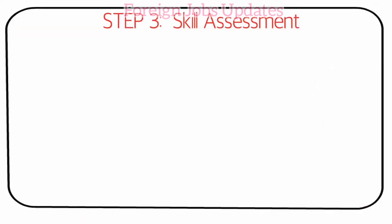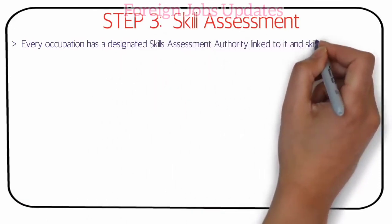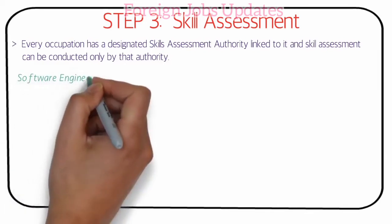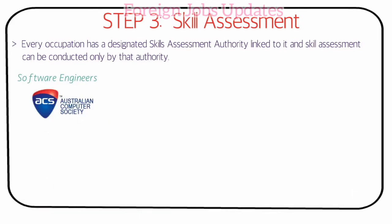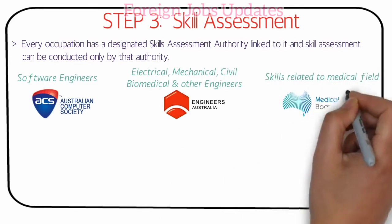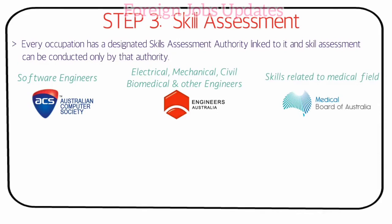Step 3 is the skill assessment. After completing eligibility and English skills, you can check the skills assessment criteria. For example, in the software field, a software engineer can be assessed through the Australian Computer Society. For electrical, mechanical, civil, and biomedical engineers, you can check Engineers Australia, which is a certified body.